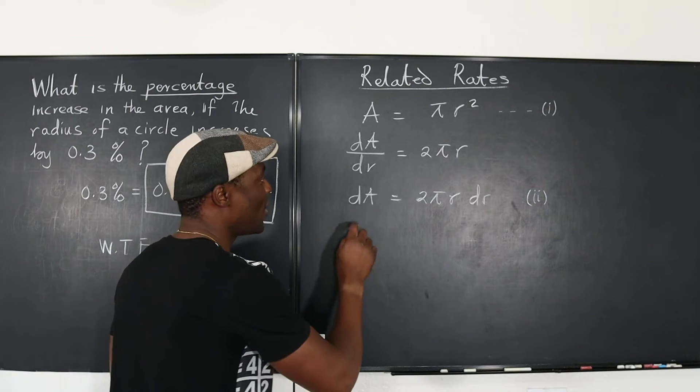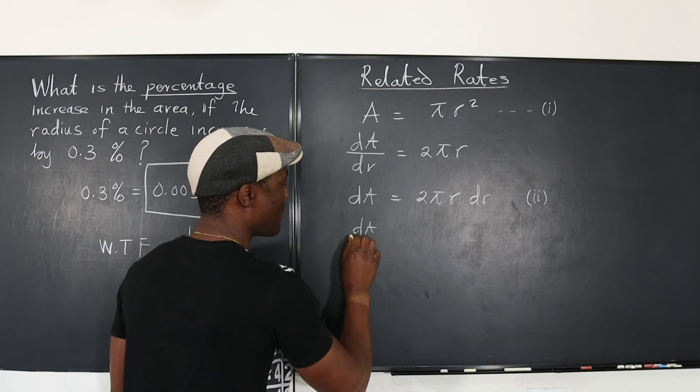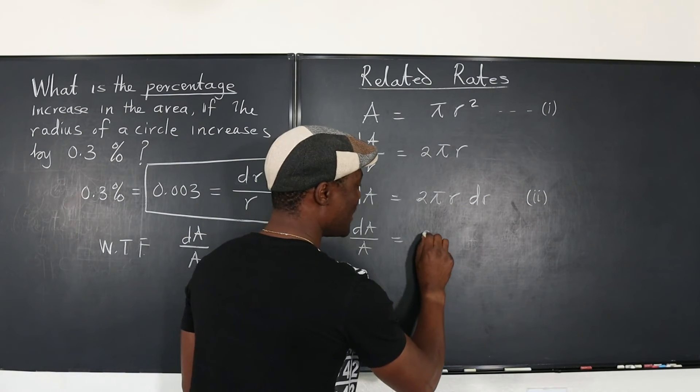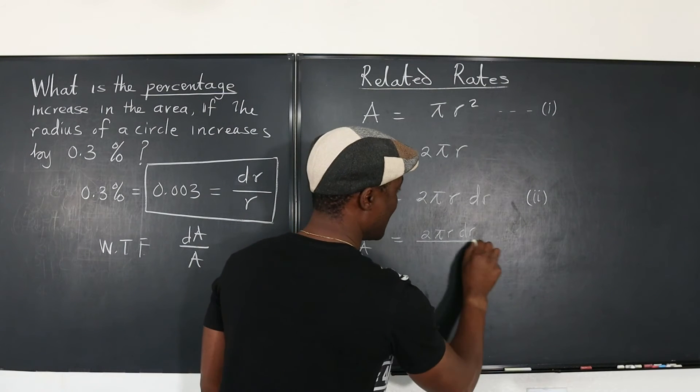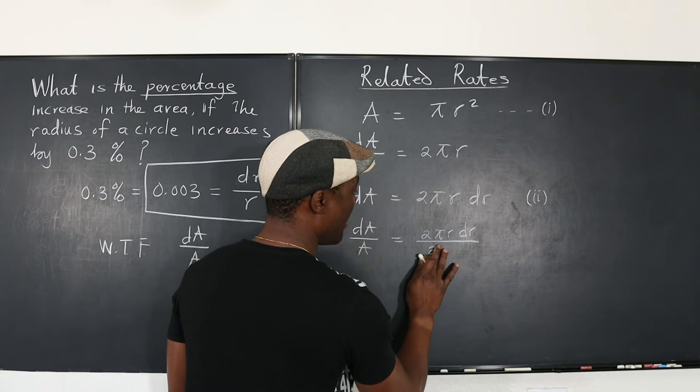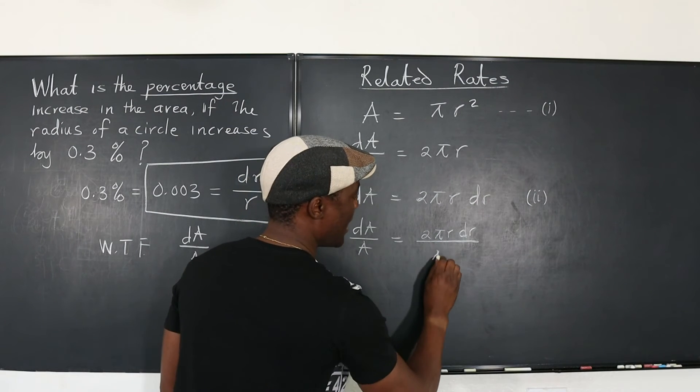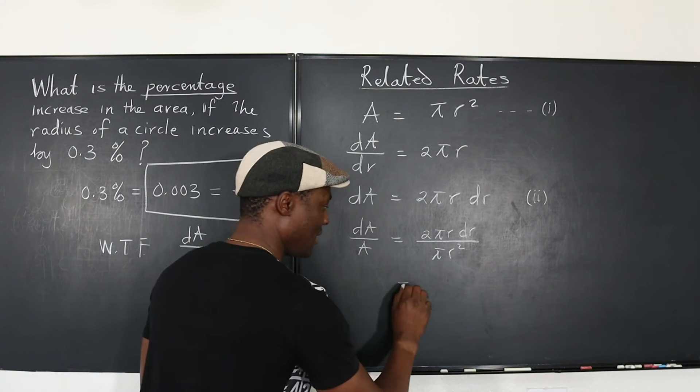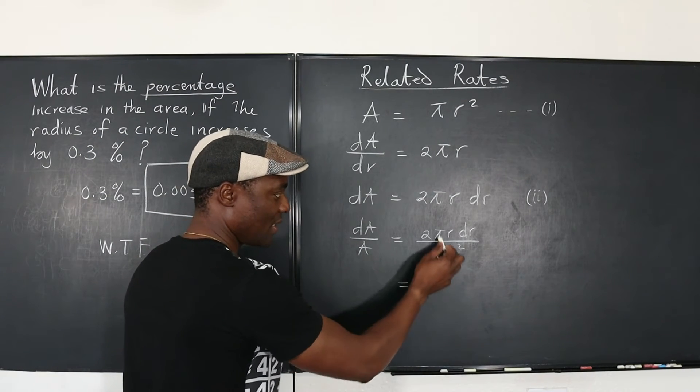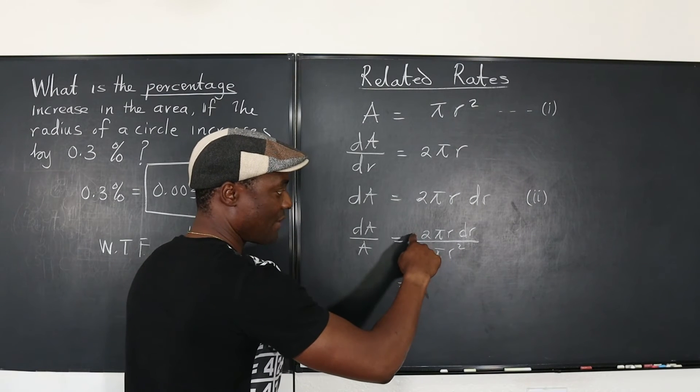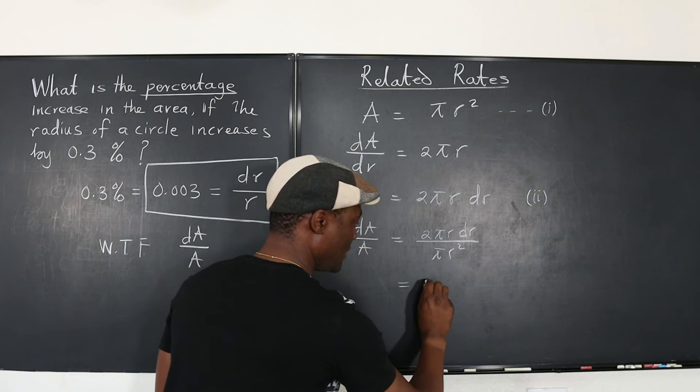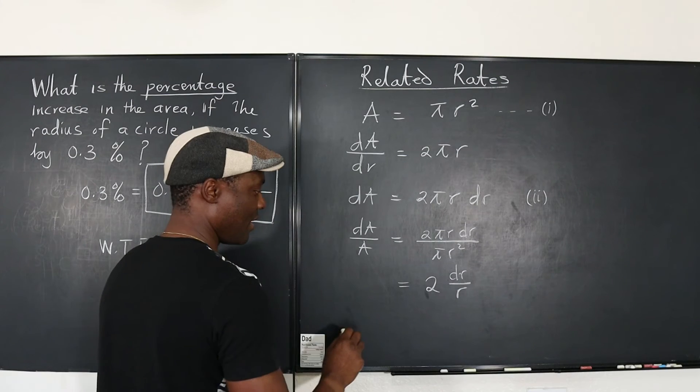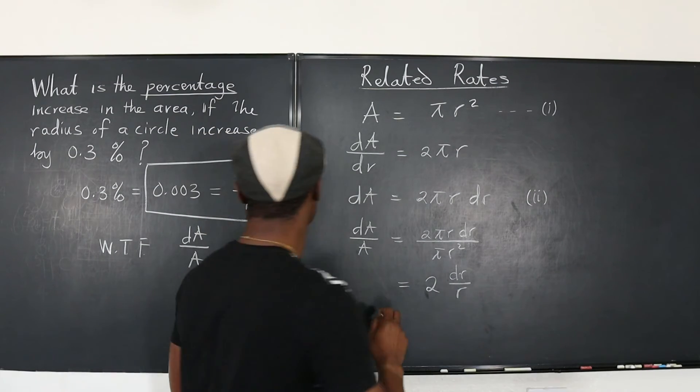Here we're going to divide this by this, so we have dA over A, which is what we're looking for, is equal to 2π r dr divided by π r squared. If you look at this expression, what does it tell you? It tells you you can take this π out, you can simplify this, and you're going to have 2 here and dr over r. So it is 2 times dr over r.